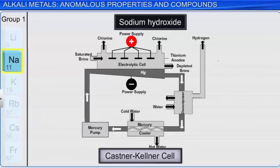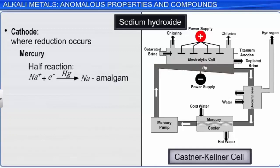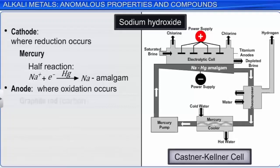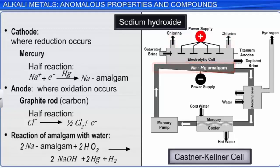In the Castner-Kellner cell, the cathode is where reduction occurs. Mercury functions as the cathode; in the reduction half-reaction, sodium ions combine with an electron to form a sodium-mercury amalgam. Oxidation occurs at the anode, where a rod of graphite (a form of carbon) is used. In the oxidation half-reaction, chloride ions form chlorine gas and release electrons. The sodium-mercury amalgam that forms at the cathode then reacts with water, releasing sodium hydroxide, mercury metal, and hydrogen gas.